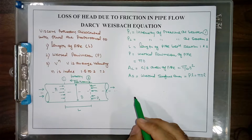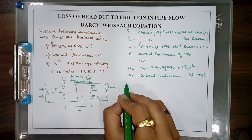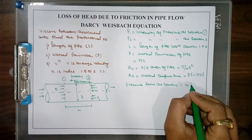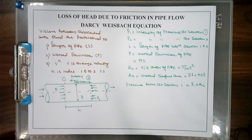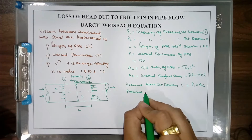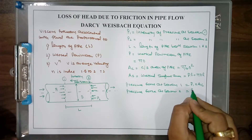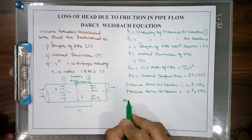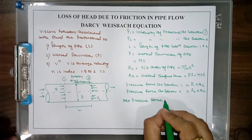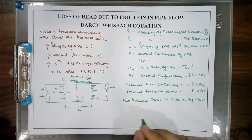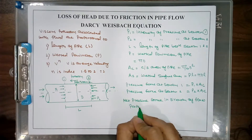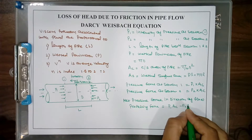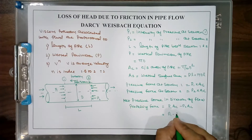From the pressure intensity we calculate the pressure force acting at section 1, which is P1 times the cross-sectional area Ac. Similarly, the pressure force acting at section 2 is P2 times Ac. So the net value of pressure force in the direction of flow, also called the propelling force, equals P1·Ac minus P2·Ac, which simplifies to (P1 − P2)·Ac.